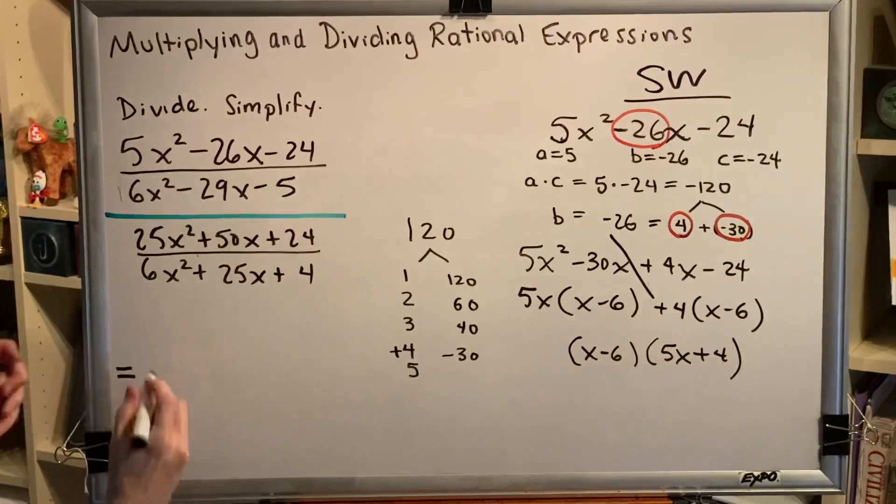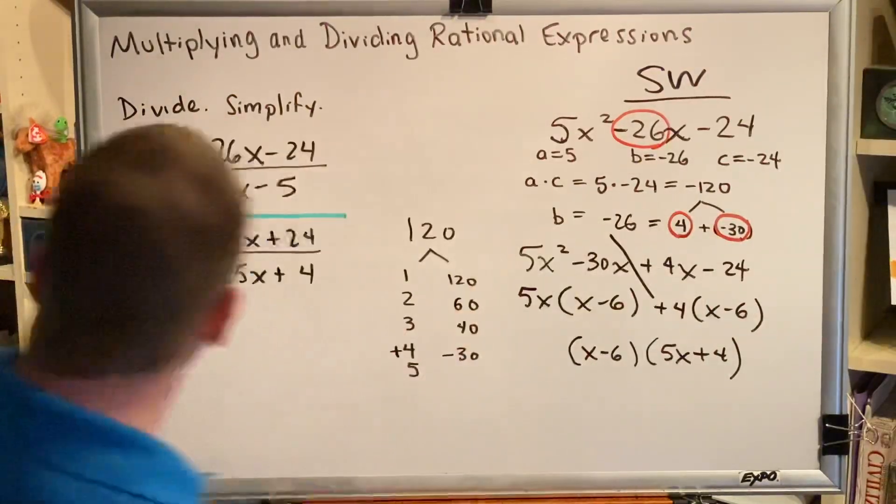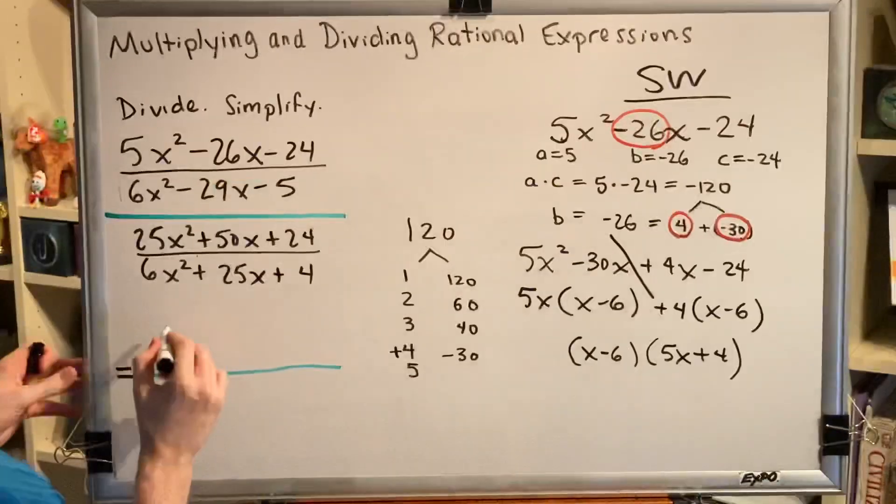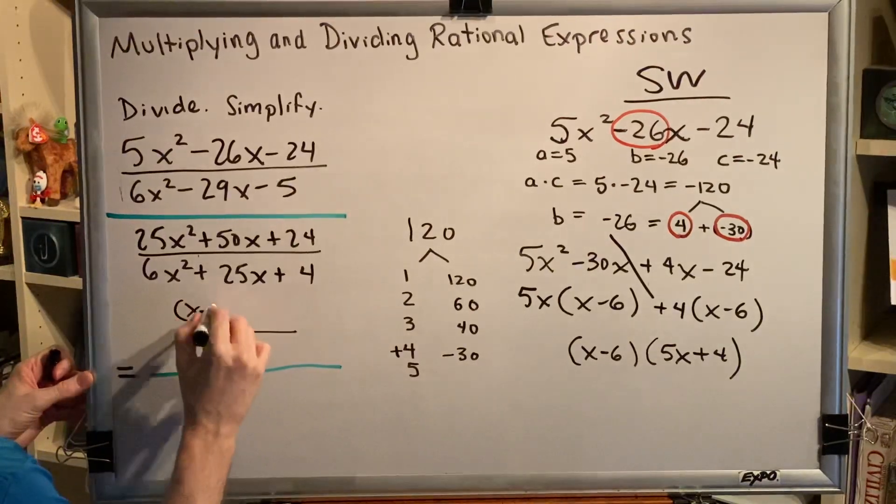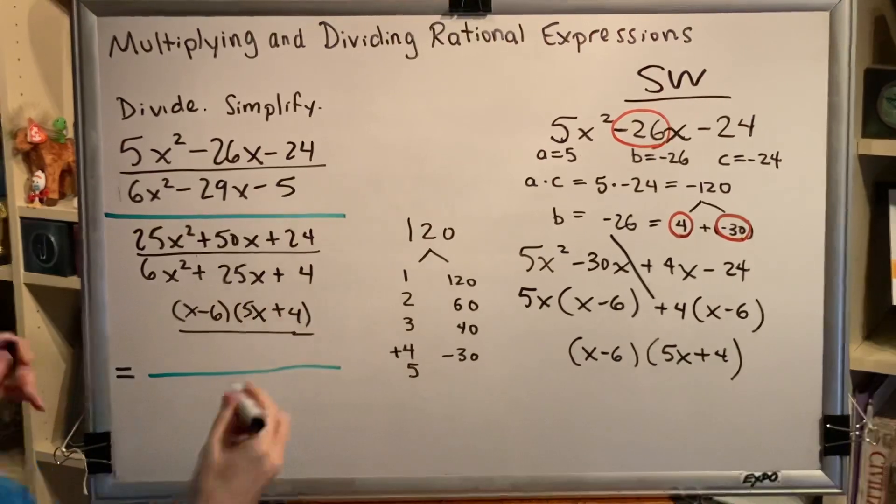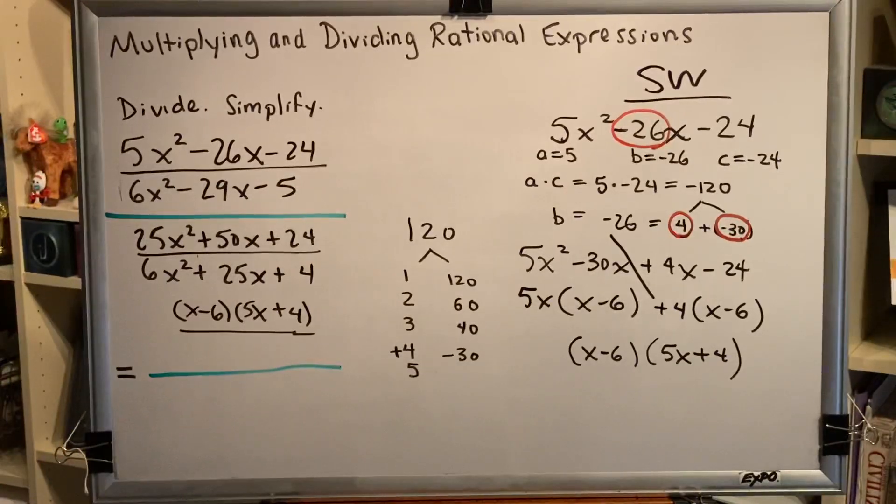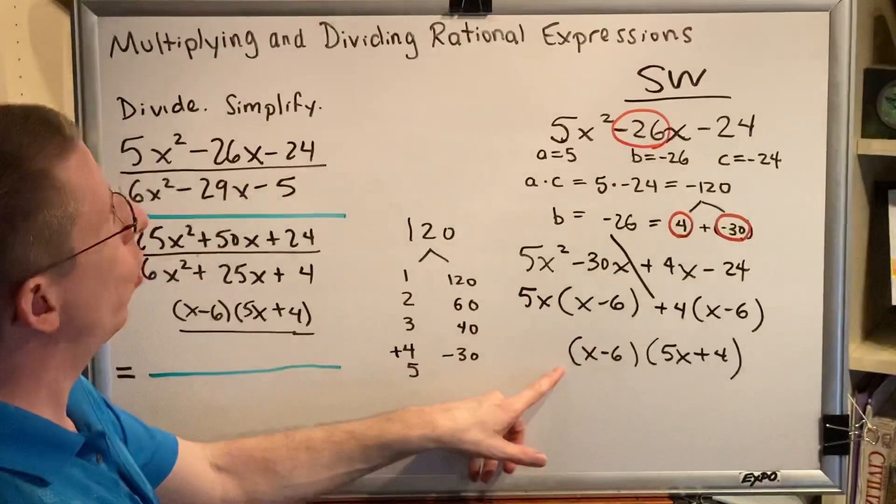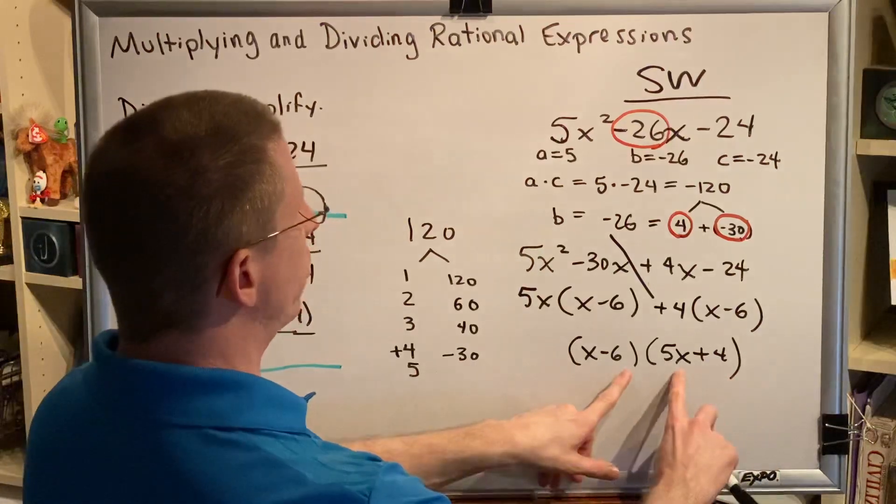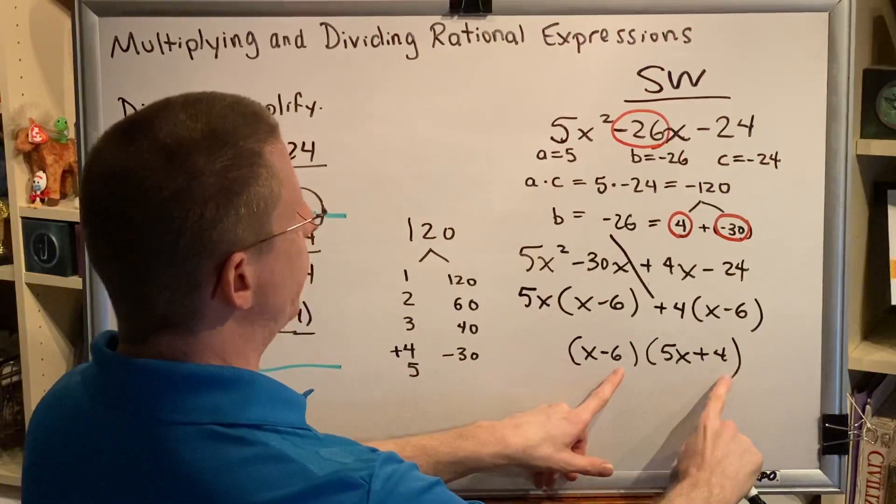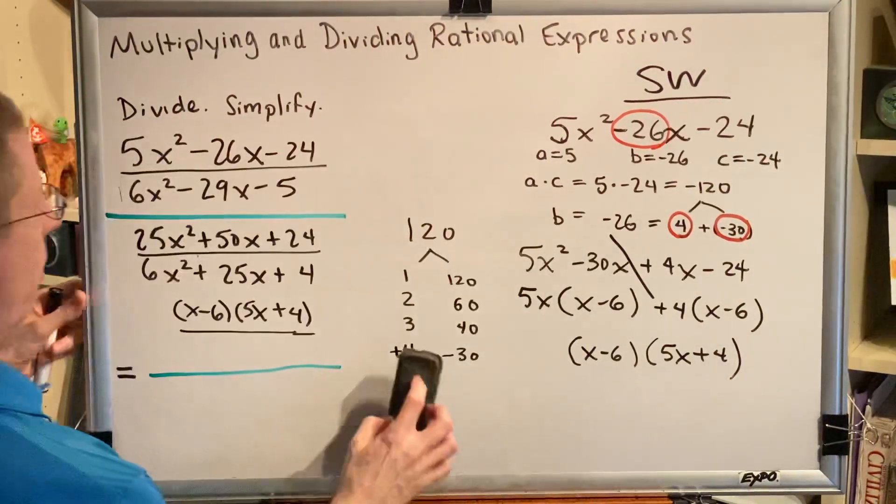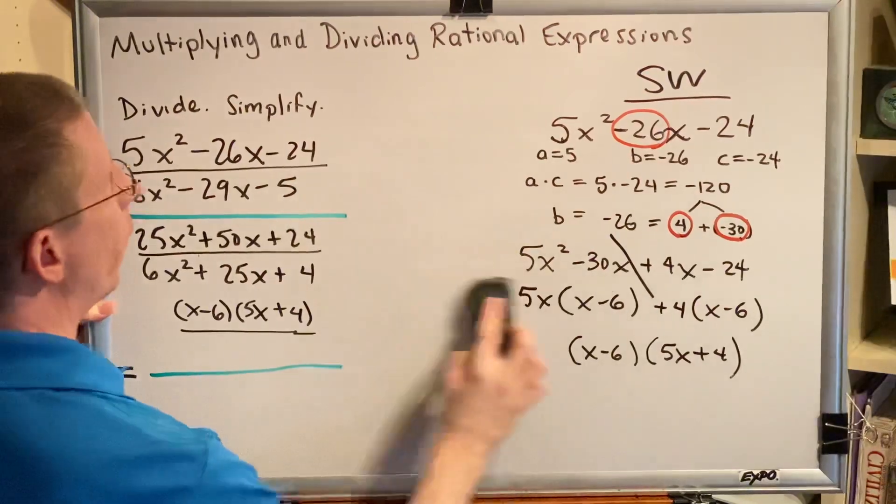We're going to take the result and we're going to put it in our problem. We now have the numerator of the numerator. (x - 6) times (5x + 4). And one more thing, I'll throw this in really quickly. You can always check factoring with FOIL. So if you were to FOIL this, 5x² + 4x - 30x makes the -26x, and a -6 times a positive 4 makes a -24. Great. So, we've completed our first factoring problem.